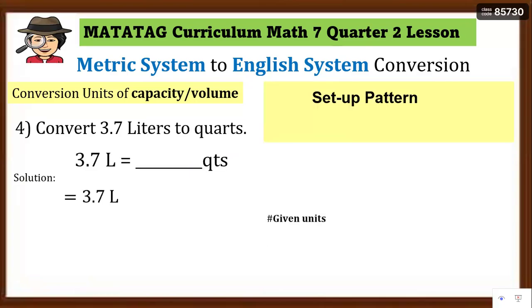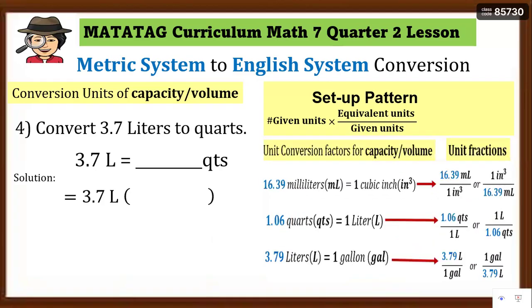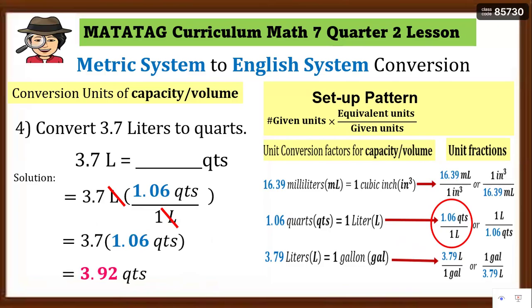Number 4: convert 3.7 liters to quarts. Remember to write the equation and set up the pattern. Since the given unit is liters and we need to change to quarts, the unit fraction must have liters in the denominator to cancel it, with quarts in the numerator. We use 1.06 quarts over 1 liter. Set up, cancel the liter unit, then multiply: 1.06 quarts times 3.7 equals 3.92 quarts, rounded to 2 decimal places. So 3.92 quarts is equivalent to 3.7 liters.